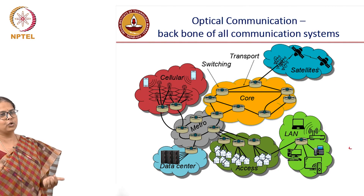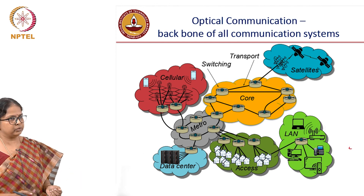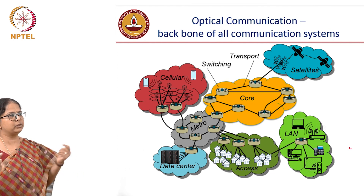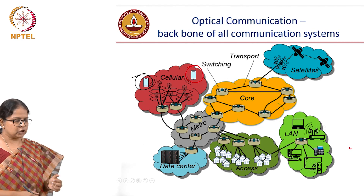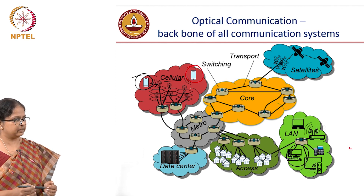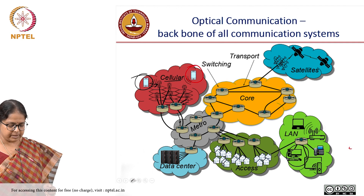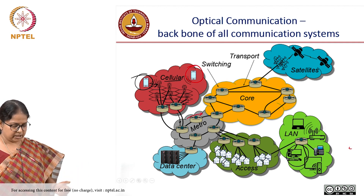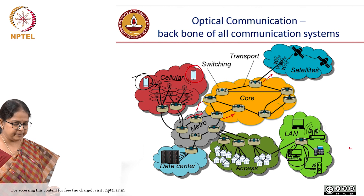This picture shows that optical communication works as a backbone for all the different kinds of communication we are doing today. When we say communication, it is synonymous with wireless communication — we think of a cell phone or the internet. In cellular communication, you connect from your instrument to a tower, which connects to access nodes, then to the metro network, and then into the core network and back to the user equipment.